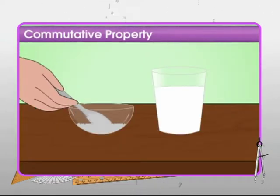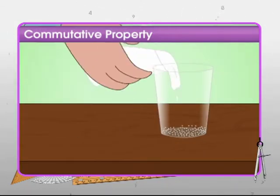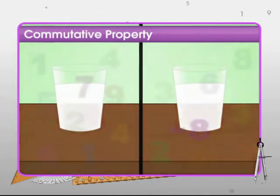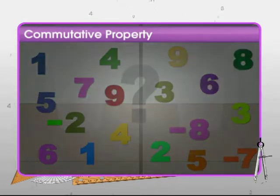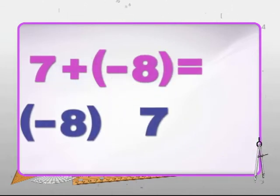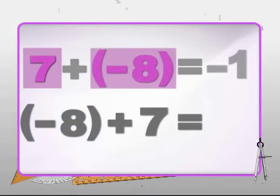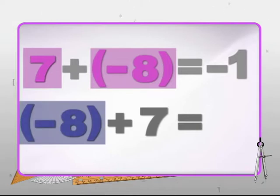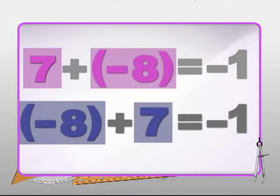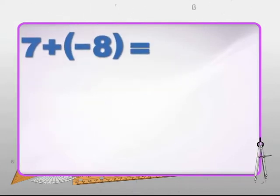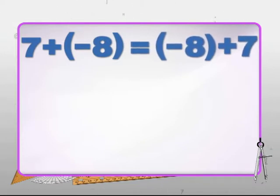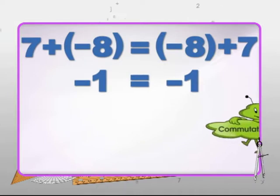In the virtual world: adding sugar to milk or milk to sugar makes no difference. Testing with numbers: 7 plus minus 8 equals minus 1, and minus 8 plus 7 also equals minus 1. So 7 plus minus 8 equals minus 8 plus 7. This is called the commutative property — the word means to commute or move around.